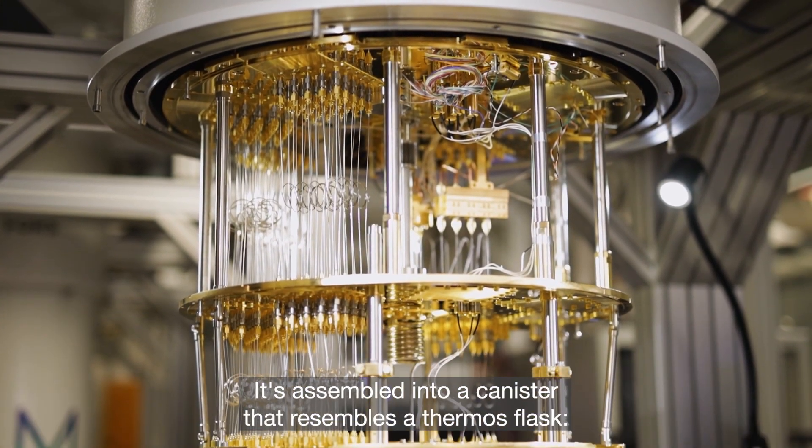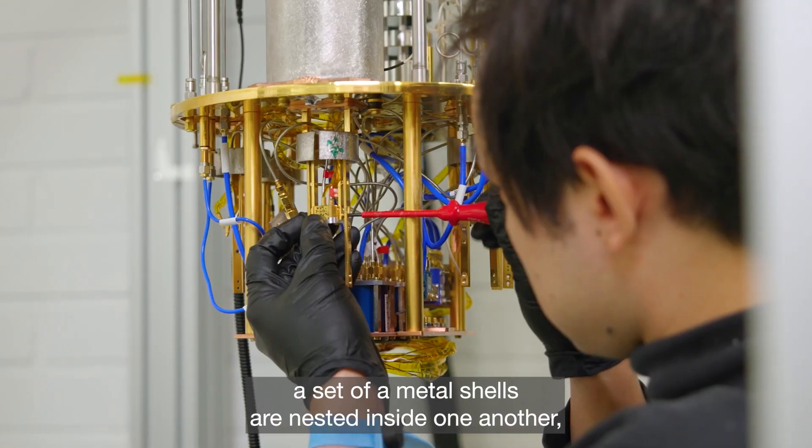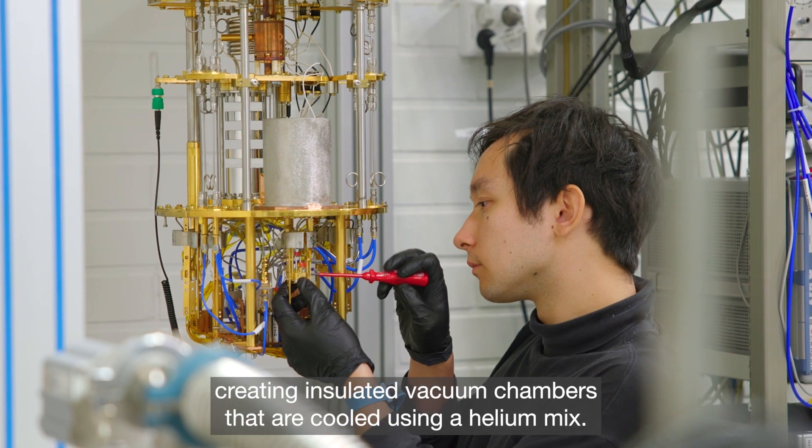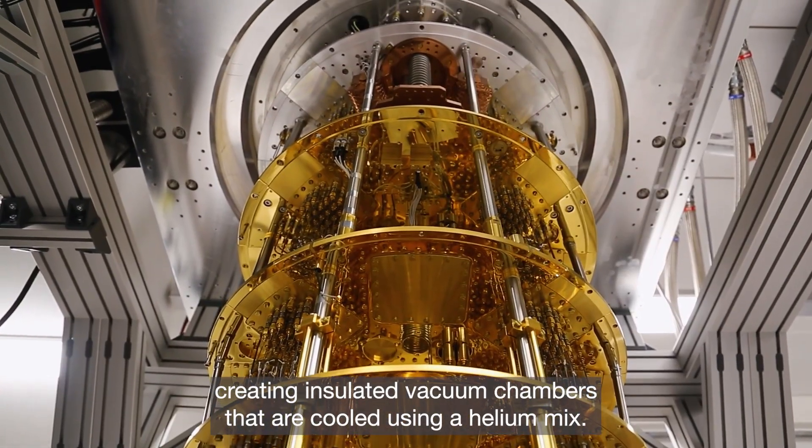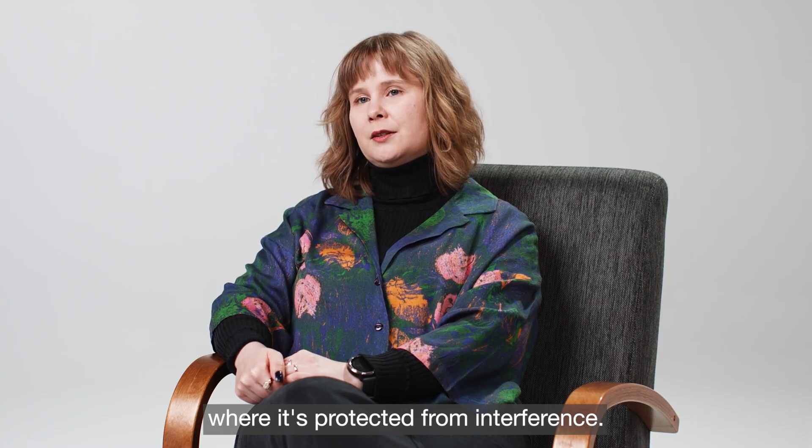It's assembled into a canister that resembles a thermos flask. A set of metal shells are nested inside one another, creating insulated vacuum chambers that are cooled using a helium mix. The quantum chip is mounted in the cryostat where it is protected from interference.